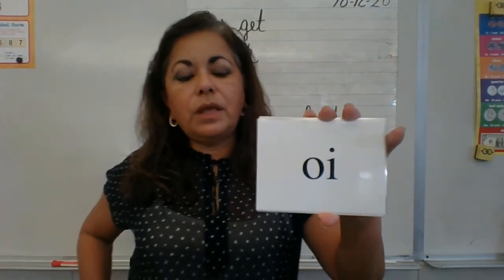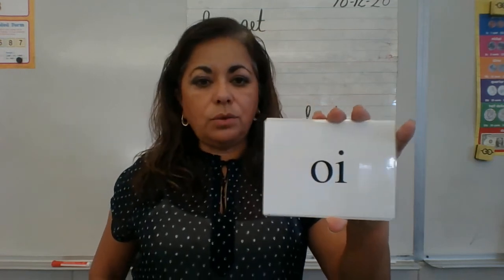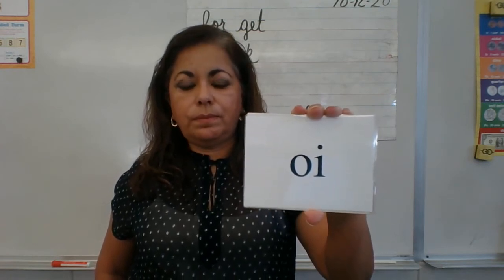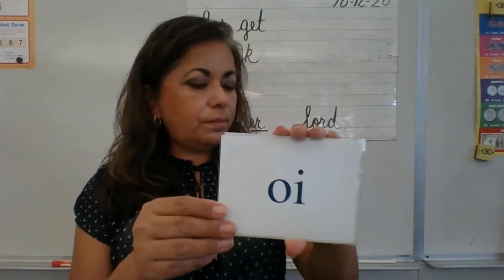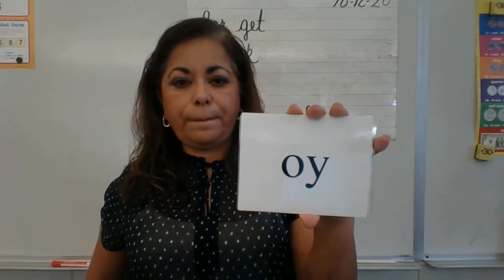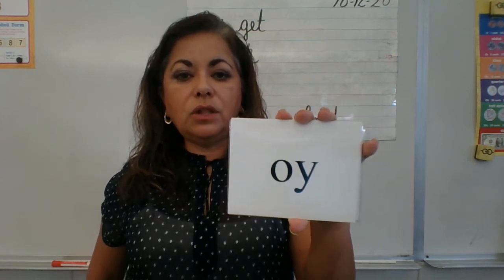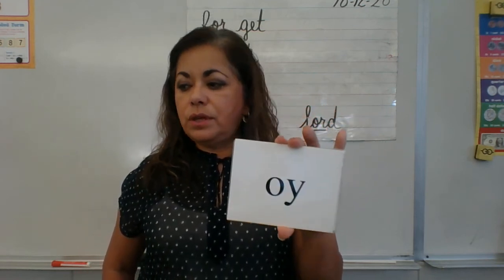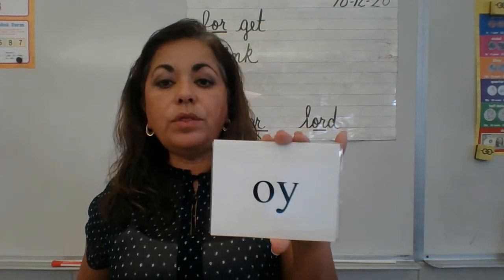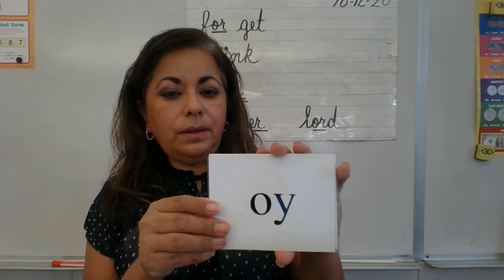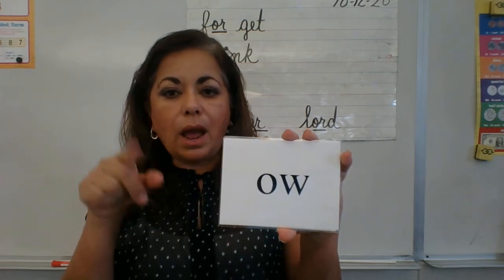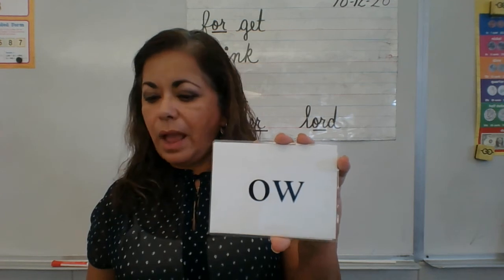'Oi' — that we may not use at the end of an English word. Write it and say it at the same time. 'Oy' — that we may use at the end of an English word. If you learned this as 'oi as in boy,' in this class we're going to learn it as 'oi that we may not use at the end of an English word' and 'oy that we may use at the end of an English word.' The next phonogram is 'ow' — two sounds: 'ow, o.' Write it: ow, o.